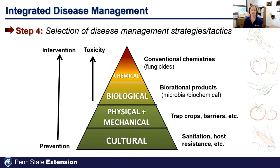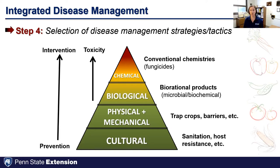Step four in integrated disease management is the selection of disease management tactics and strategies. We follow what we call the IPM pyramid, starting at the bottom by implementing as many cultural, physical, and mechanical practices as possible to prevent disease from developing in the first place. As we work up the pyramid, we're talking about intervention — biorational products or conventional chemistries if we anticipate a disease or see symptoms. By far the majority of the tools we use are in this prevention tier.